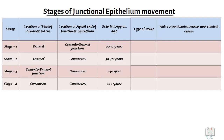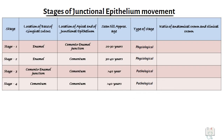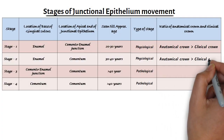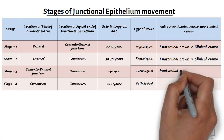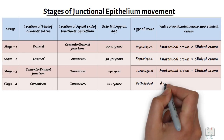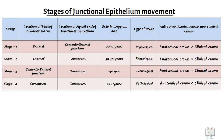Many researchers believe that the first and second stages are physiological stages, whereas stages 3 and 4 are pathological stages. Moreover, in the first and second stages, the anatomical crown is longer than the clinical crown. In the third stage, the anatomical crown is equal to the clinical crown, whereas in the fourth stage, the anatomical crown is shorter than the clinical crown.